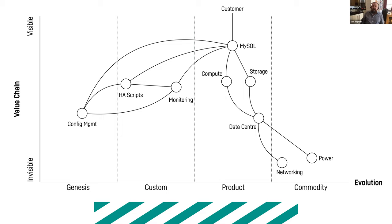This is a Wardley Map for a highly available MySQL database service. The customer interacts with MySQL, which itself depends on compute, storage, monitoring, and scripts to manage failover. This is based on a 2009 on-premises environment. Going from left to right is the evolution axis — on the right are commodity things like networking and power, which you just buy from the market. You're not going to build a generator to run your MySQL server.